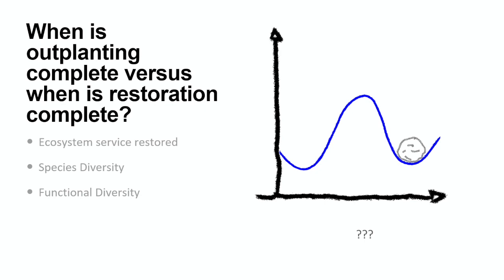In some sense, restoration is complete when we get the system far enough that natural resilience takes over. But even if our restoration is targeted at restoring an ecosystem service, we still want it to be a resilient solution — otherwise we would just build a seawall. No matter what the target is, we have to think about biodiversity and whether we're achieving resilient ecosystem services.